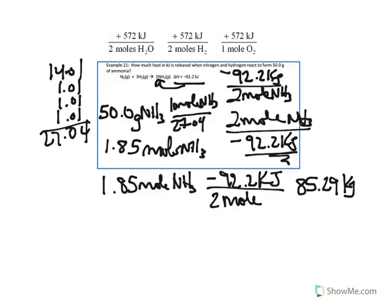This makes sense — we have almost 2 moles, and for every 2 moles you get 92.2 kilojoules, so our answer of 85.29 is close to that. This concludes Chapter 7. Thank you for listening, and I hope to see you at Chapter 8.